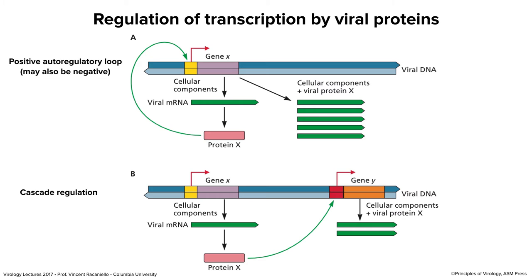For more complicated viral genomes, we have cascade regulation. Viral DNA enters a cell; cellular components transcribe a promoter to make a viral mRNA translated to protein X. Protein X then activates a second promoter that would not be recognized by the cellular machinery until protein X is made. This can go up to three or four steps. It's obvious why we call it cascade regulation — you make one protein in order to make the second, in order to make the third.